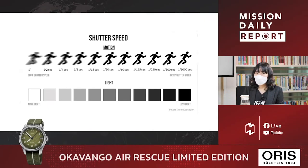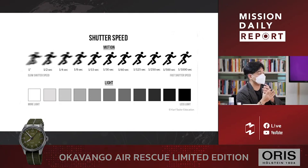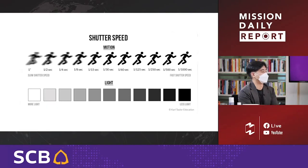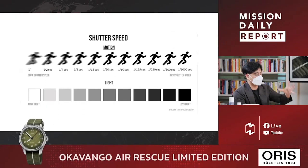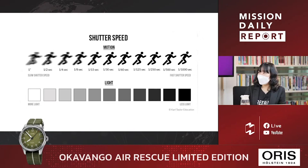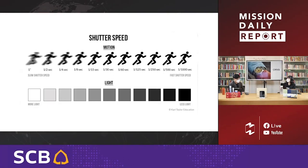If you want to capture light trails or slow motion effects, you should use a slower shutter speed. For example, around 15 to 20 seconds of exposure can capture light. However, you need a tripod to keep the camera stable so the image doesn't blur from camera shake. For a fast subject like Formula 1, you need a very fast shutter speed.